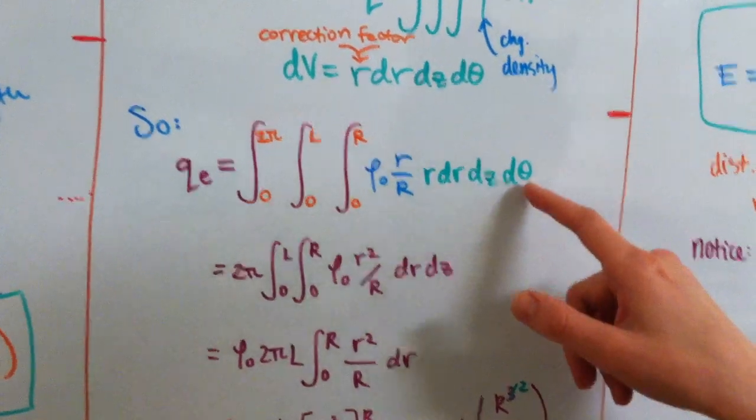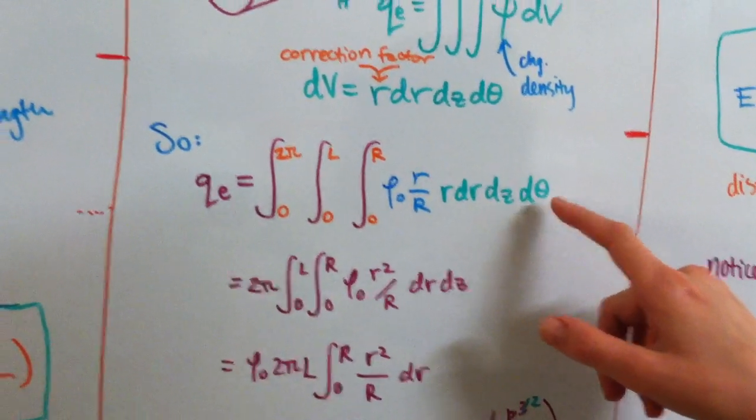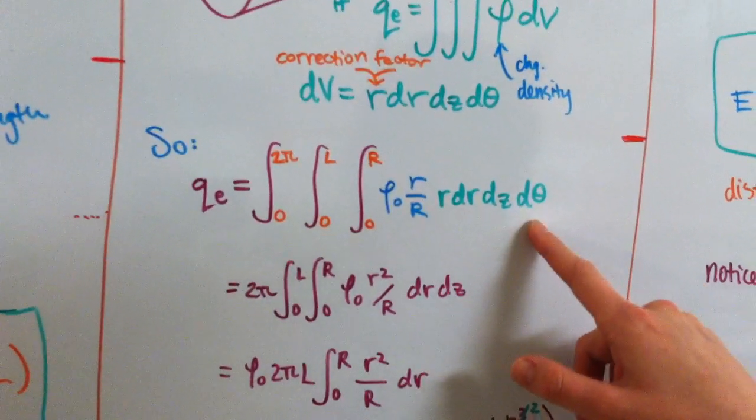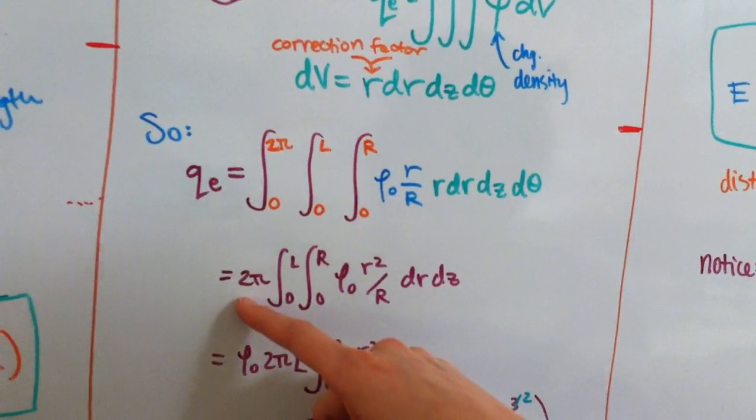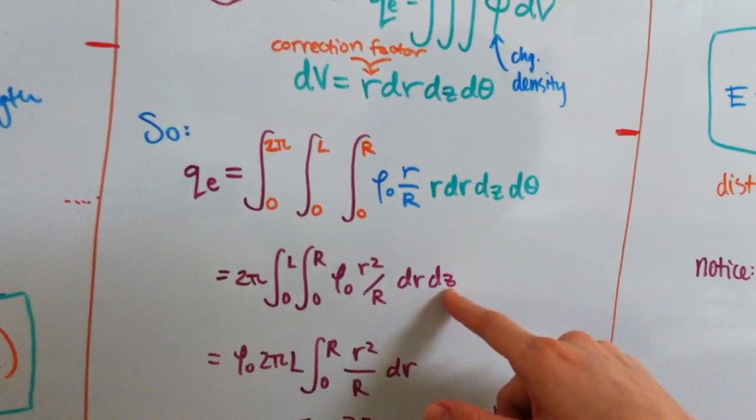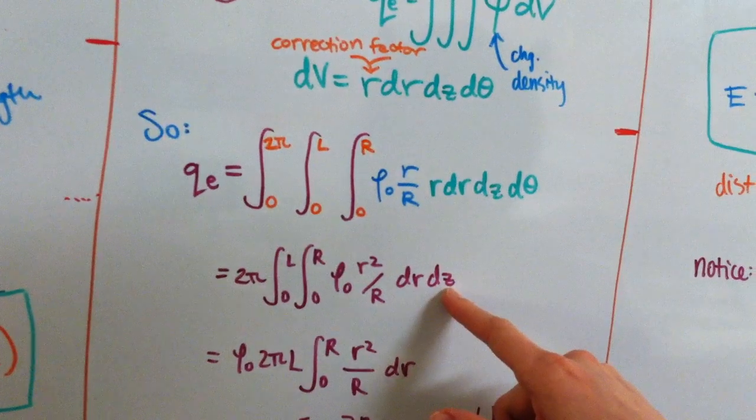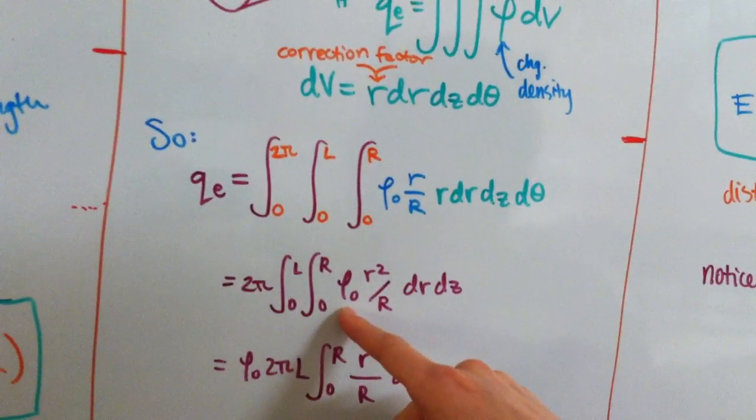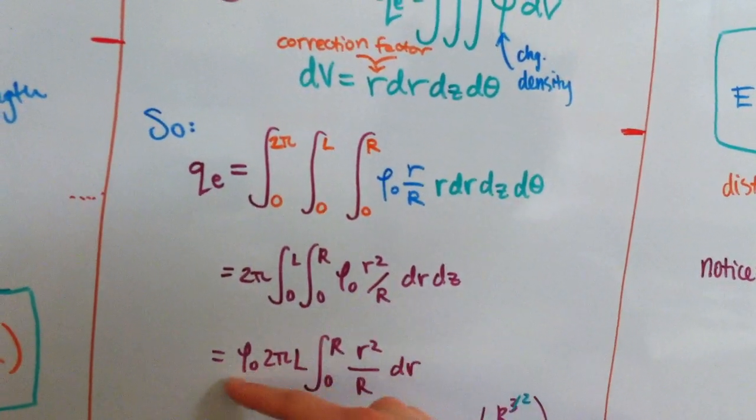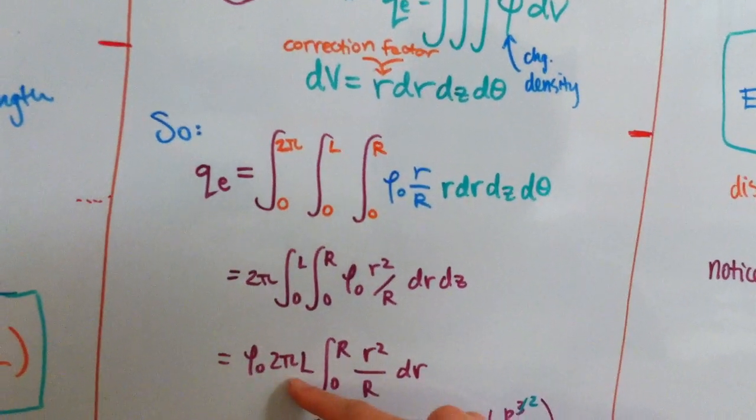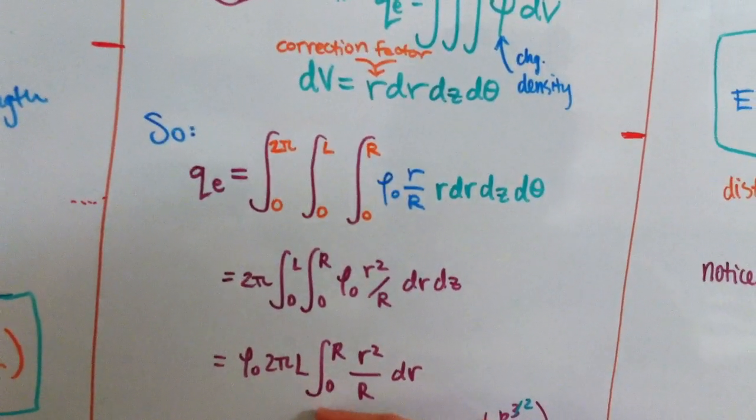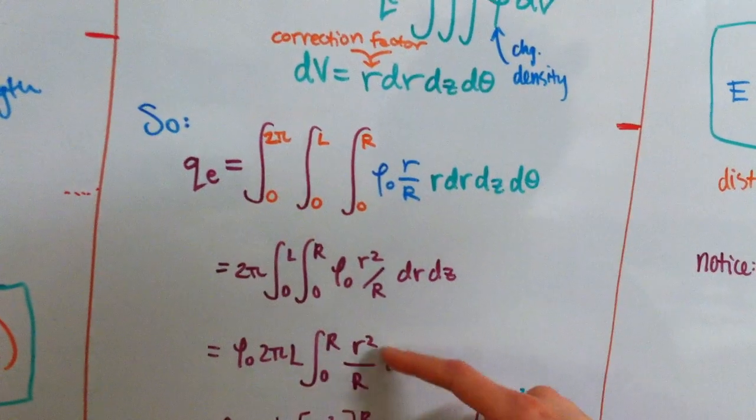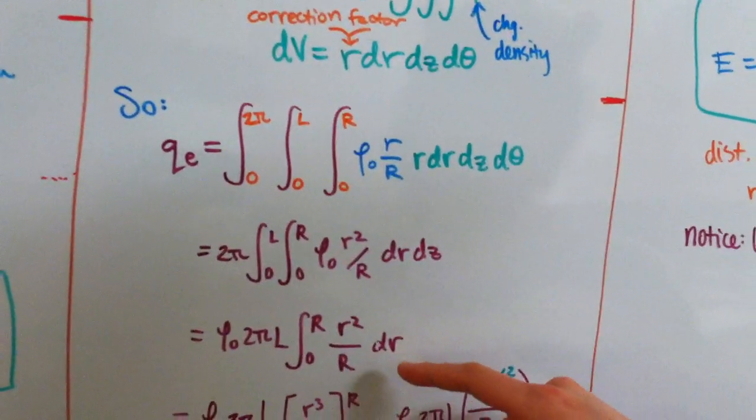So, we take the integral of theta, since there's no variables, it just ends up being 2π. Same thing with dz, it just ends up turning into L, and as well as the rho naught, which is a constant, we can pull those all out, and we get rho naught 2πL, integral 0 to R, little r squared over big R, dr.